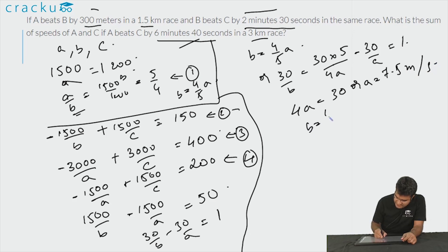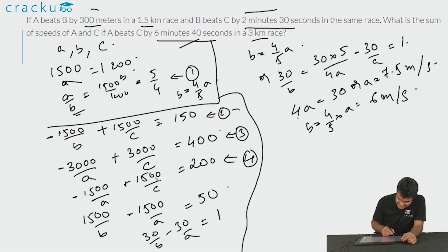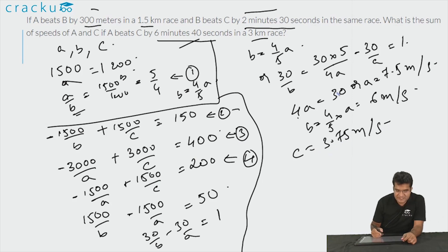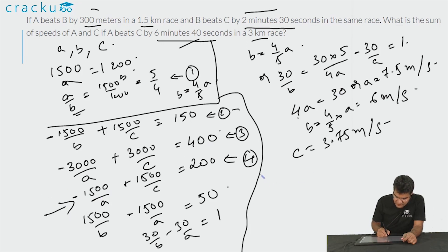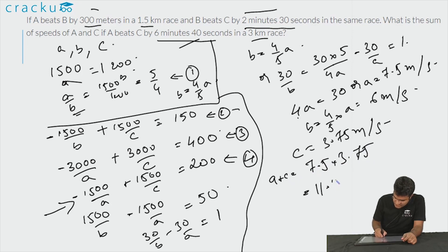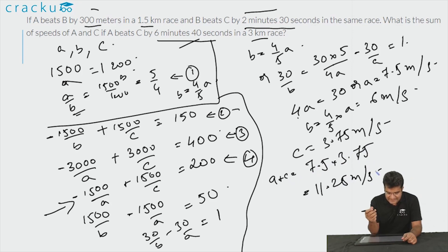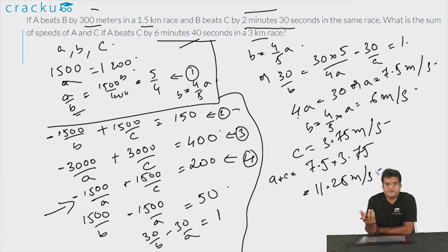B = (4/5) × 7.5 = 6 metres per second. Substituting the value of A back into the equation for C gives C = 3.75 metres per second. The sum of the speeds of A and C is 7.5 + 3.75 = 11.25 metres per second. This is a simple question with 3 equations and 3 unknowns.